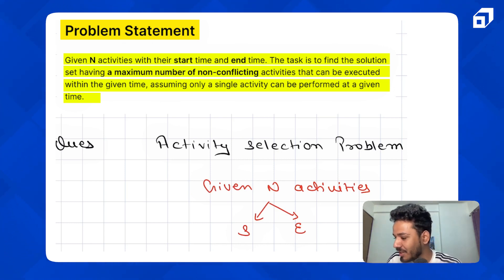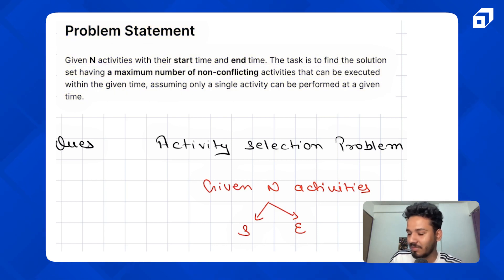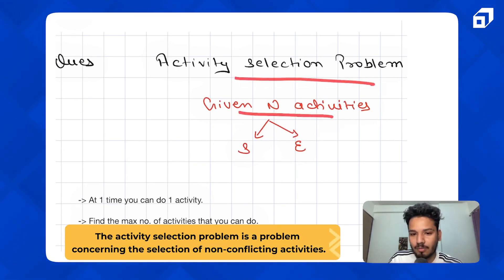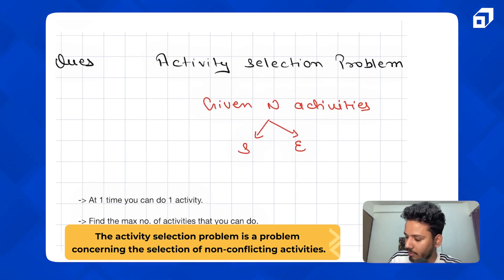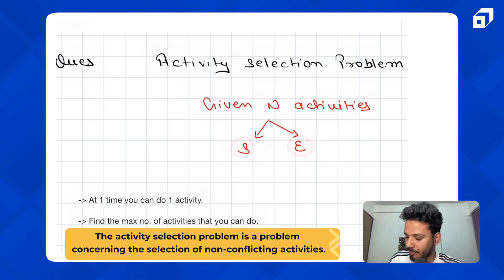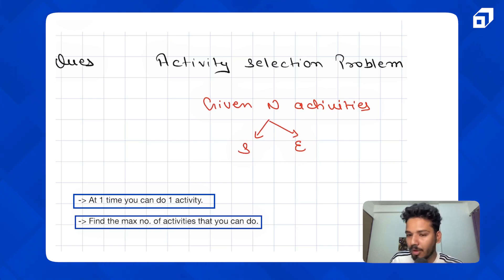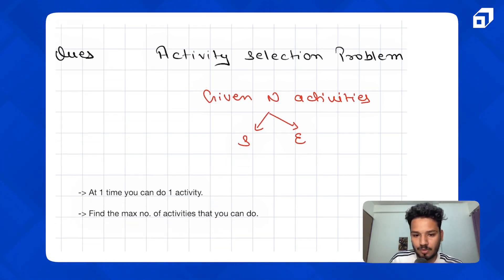When I read it for the first time it seems complex, but we can format it a little easier. The question is very simple — you are given some activities with a start and end time. At one time you can do one activity, and you have to find the maximum number of activities that you can do.